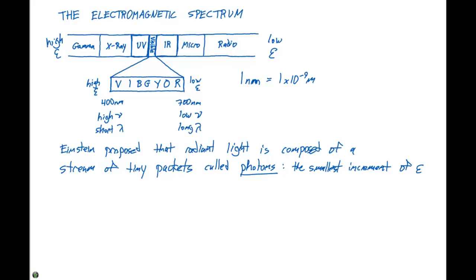And scientists at the time developed a relationship for the energy of a single photon. So for a single photon, we can come up with a relationship that energy is equal to H times nu. And we can also say that nu is equal to C divided by lambda. So the relationship that we can come up with is E is equal to HC divided by lambda.